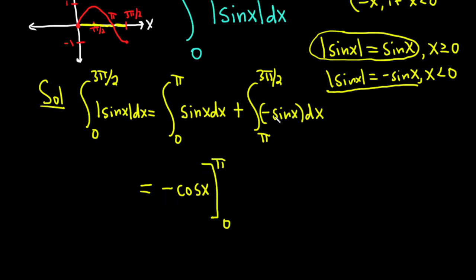Here it's a little bit easier because when you integrate negative sine you just get cosine. So plus cosine. And again you should mentally check the derivative of cosine is negative sine. We're going from pi to 3 pi over 2.